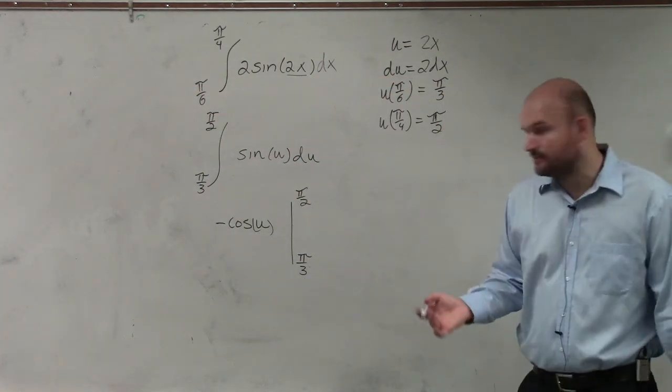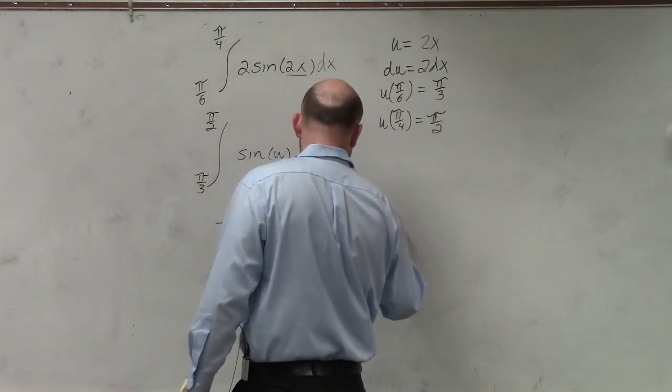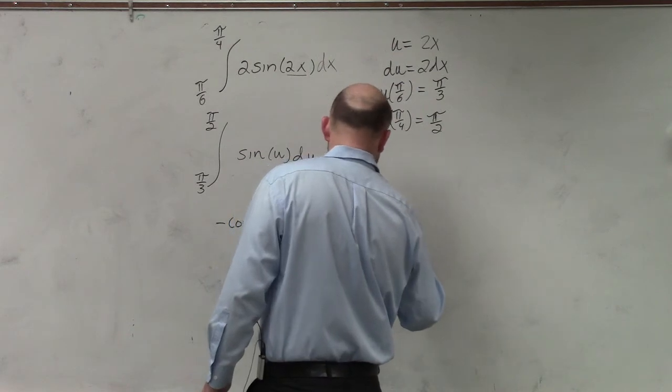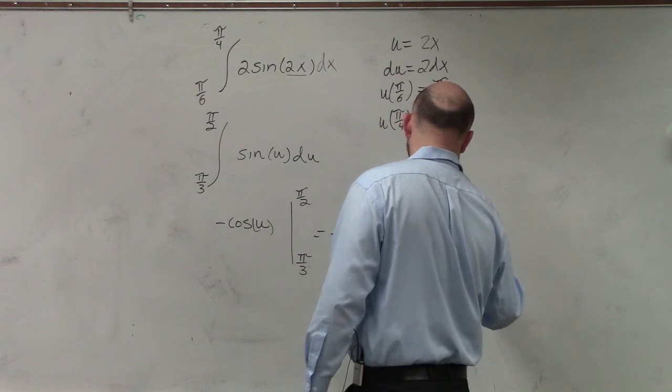So again, just like what we've done before, you're just plugging in. So you have negative cosine of π halves minus a negative cosine of π over 3.